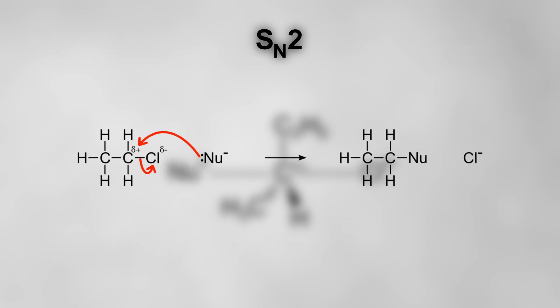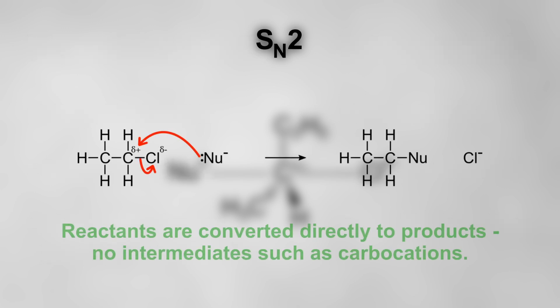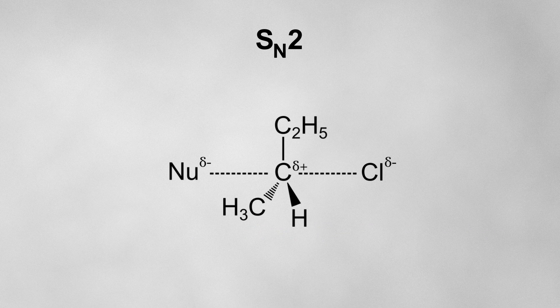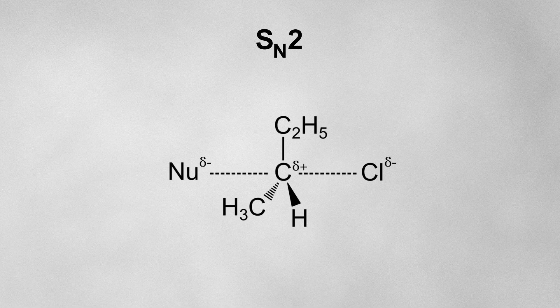A reaction doesn't always have an intermediate. SN2 doesn't, for example. But there is always a transition state. A transition state is essentially the configuration of the atoms as they are transitioning from the reactants to the products.